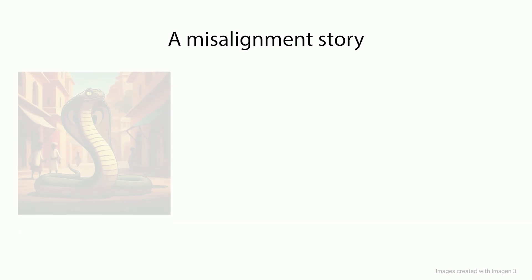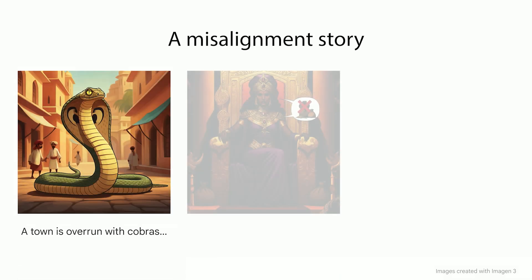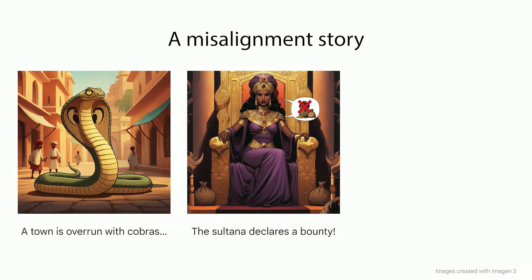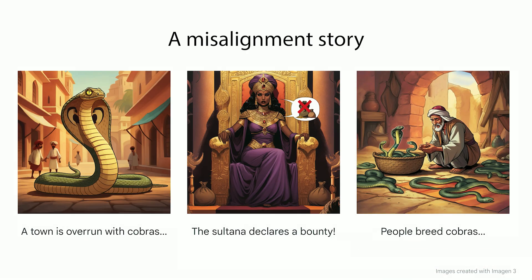Let's consider a stylized misalignment story. This may or may not have happened in real life — it's kind of unclear. There was a town that had a cobra problem, and so the sultan instituted a reward for each dead cobra brought in. Perhaps unsurprisingly, people figured out the flaw in the system. They started to breed cobras so that they could kill them and collect the reward, and the cobra problem didn't get any better.